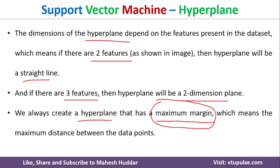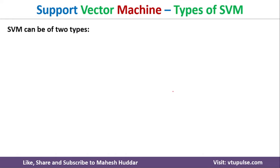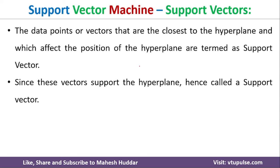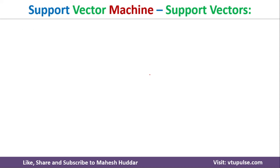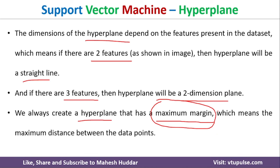When drawing the hyperplane, we consider the nearest points on both sides. For example, in a dataset, the nearest point on one side and the nearest point on the other side are called support vectors. The support vectors are the nearest data points to the hyperplane, and based on the maximum margin we select the final hyperplane.